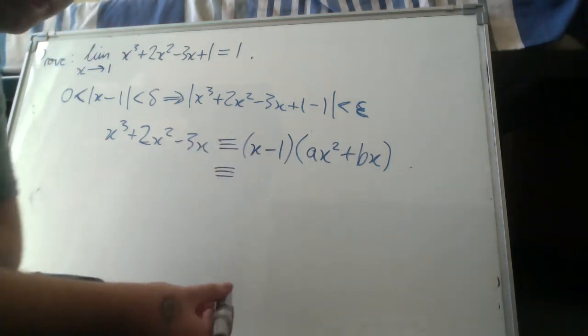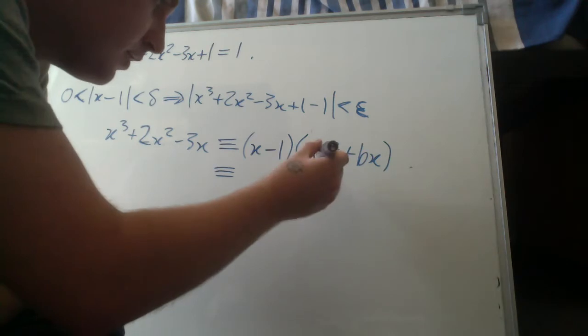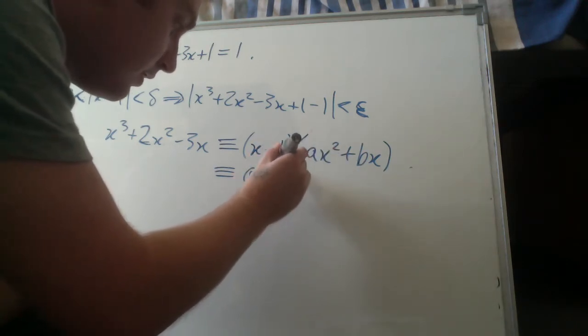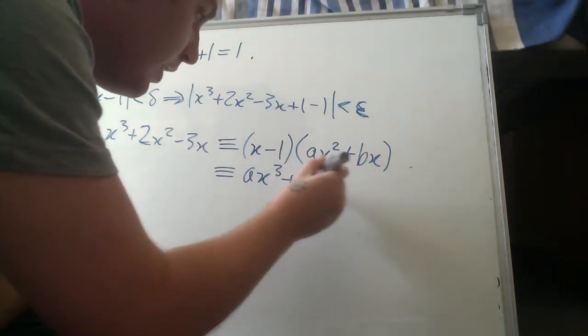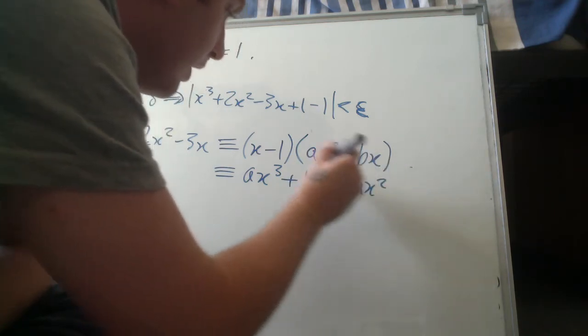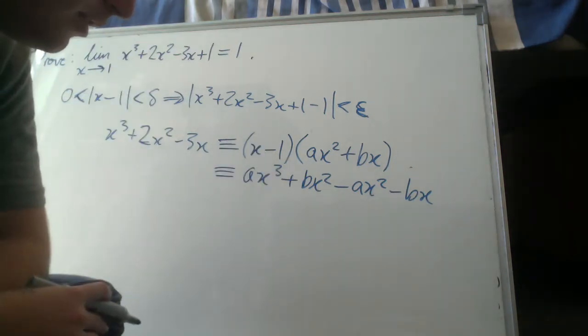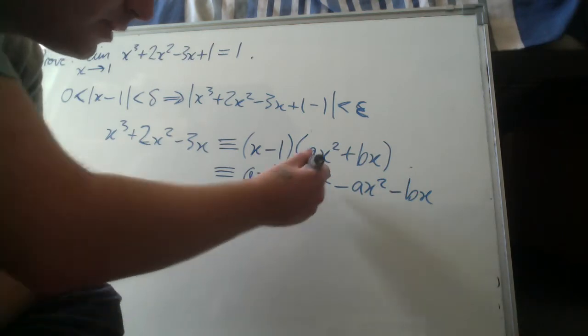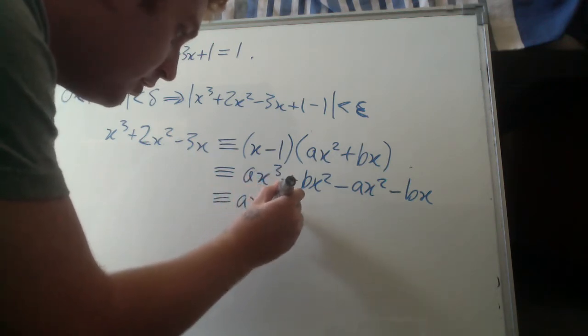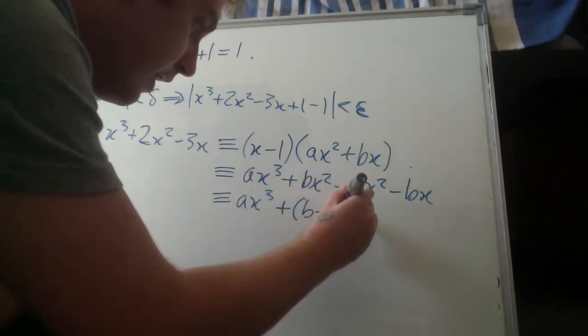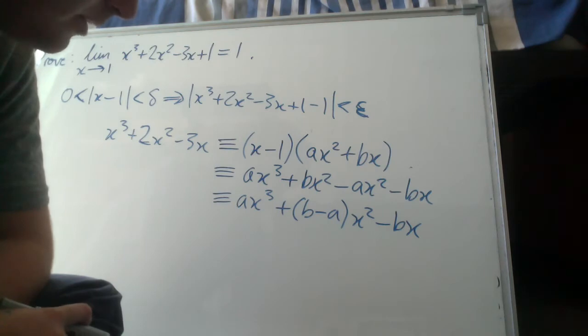So this means equivalent to... expand it out. Or the same for all values of x. So expand it out. ax cubed plus bx squared minus ax squared minus bx. Okay? So let's collect like terms and factor the x squared out. So we get ax cubed plus b minus ax squared minus bx. Okay, that should all make sense.